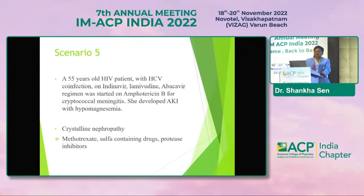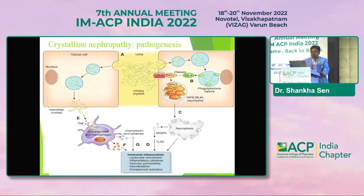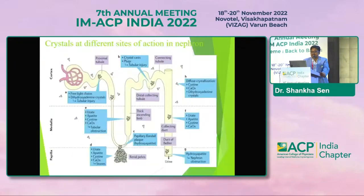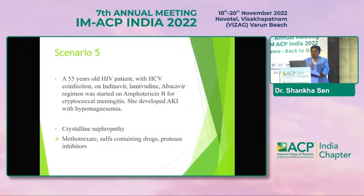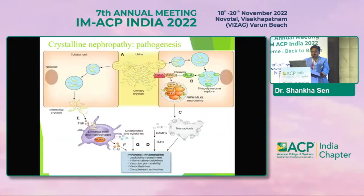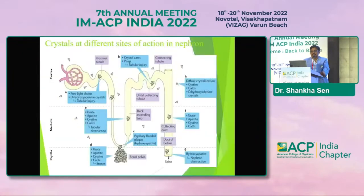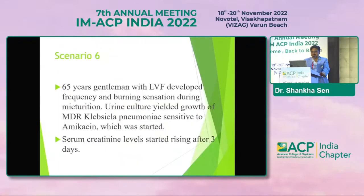In Scenario 5, a 55-year-old HIV patient with hepatitis C co-infection on indinavir, lamivudine, and abacavir regimen was started on amphotericin B for cryptococcal meningitis. She developed AKI with hypomagnesemia. It was crystalline nephropathy — crystalline nephropathy is common with these molecules and can cause acute kidney injury.